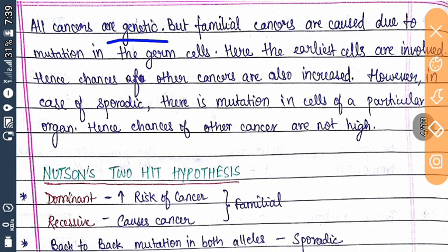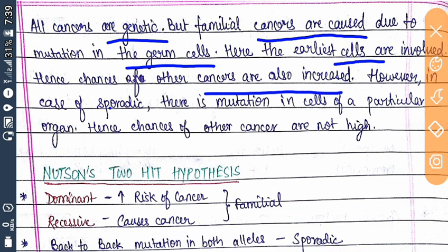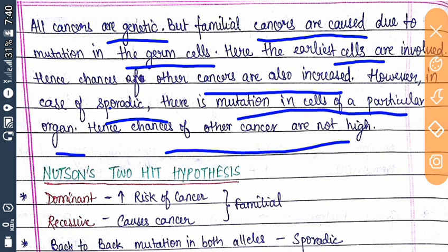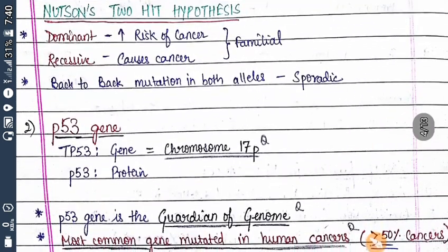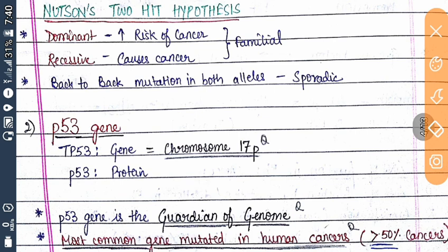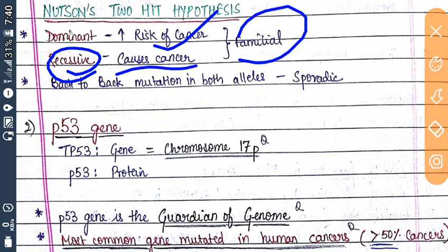All cancers are genetic, but familial cancers are caused by mutation in a germ cell. Since earlier cells are involved, chances of other cancers are also increased. In sporadic cases, the mutation is in cells of a particular organ, so chances of other cancers are not high. This is the basis of the two-hit hypothesis: in a dominant state it increases cancer risk, whereas in a recessive state both copies must be lost to cause cancer.